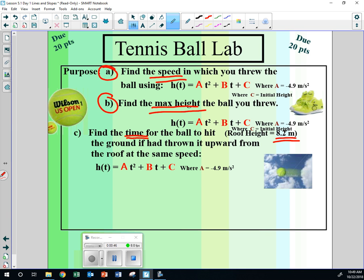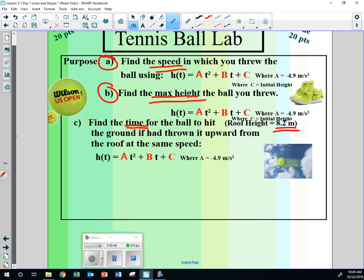So what we're going to do today is just get data. I'm going to tell you what data, but this is what we're eventually going to find: the speed, max height, and the time if you were on the roof. You're given this general equation.